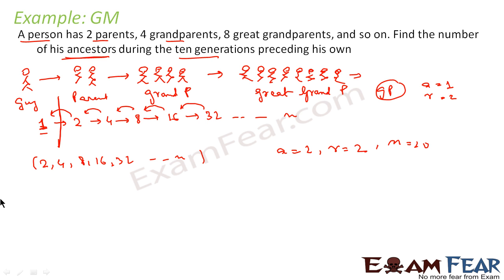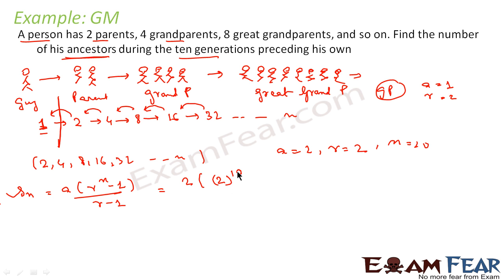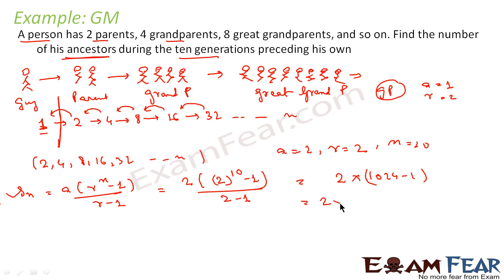We have to find Sₙ. We know that Sₙ = a(rⁿ − 1) / (r − 1). Here a = 2, r = 2, n = 10. So Sₙ = 2 × (2¹⁰ − 1) / (2 − 1) = 2 × (1024 − 1) = 2 × 1023 = 2046.